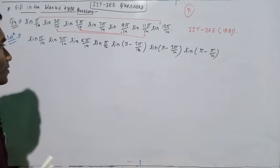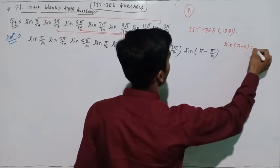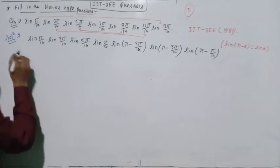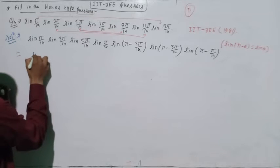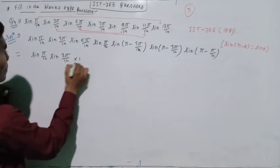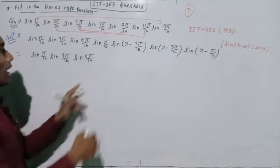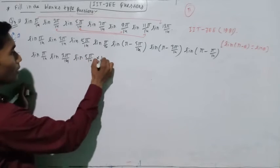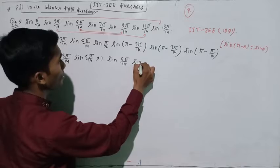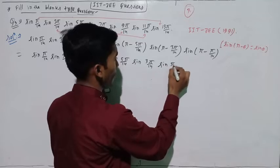Now, since you know very well that sine of pi minus theta is sin theta. Using this formula, you can write it as equal to sin of pi by 14, sine of 3 pi by 14 — it will be 1 — sine of pi by 14. And this value will be 1. Again, it will be sine of 5 pi by 14, sine of 3 pi by 14, and the last one will be sine of pi by 14.